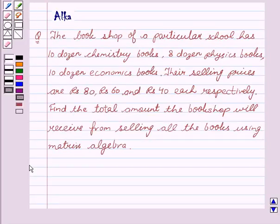Our given question is: the bookshop of a particular school has 10 dozen chemistry books, 8 dozen physics books, 10 dozen economics books. Their selling prices are Rs. 80, Rs. 60 and Rs. 40 each respectively. We have to find the total amount the bookshop will receive from selling all the books using matrix algebra.